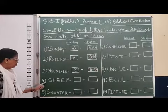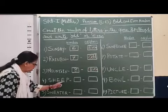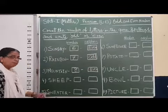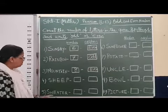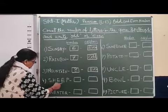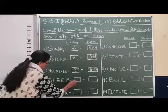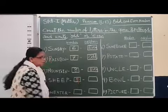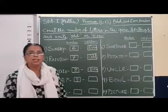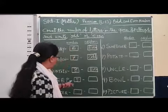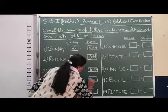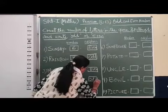Next: S, H, E, E, P — Sheep. How many letters are used? 1, 2, 3, 4, 5. Numbers ending with 1, 3, 5, 7, 9 are called odd numbers. So this is an odd number.